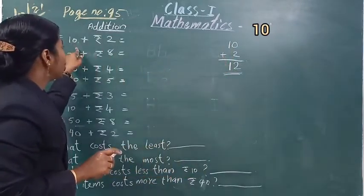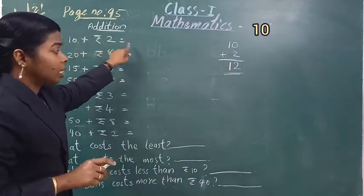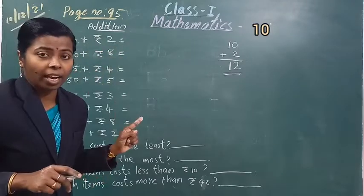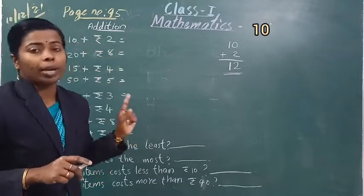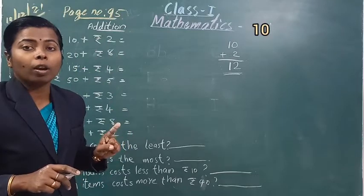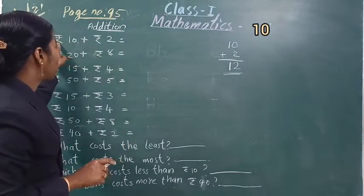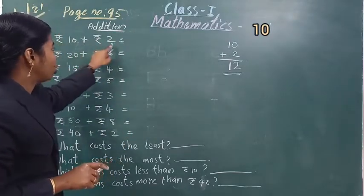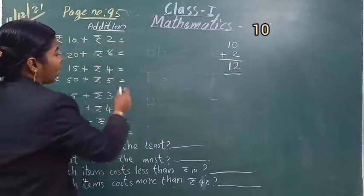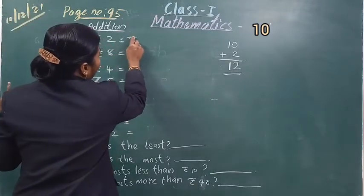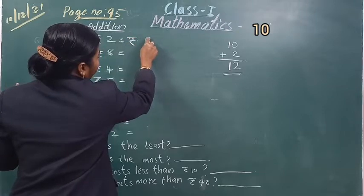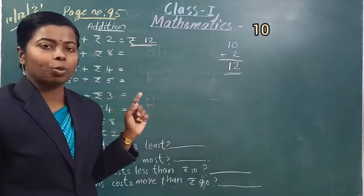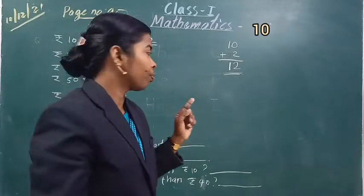See the first question: 10 plus 2 is 12. 12 क्या है? रुपीज है. यह देखो, इदर रुपीज दिया है — 10 रुपीज and 2 रुपीज. तो इदर रुपीज लिखना है, 12 रुपीज. Okay students, समझ में आया है क्या? Yes.